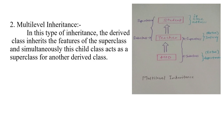The second type is multilevel inheritance. In this type, the derived class inherits the features of the superclass, and simultaneously this child class acts as a superclass for another derived class. For example, student has id, name, and address. Teacher also has id, name, and address, plus salary — so teacher is the subclass and student is the superclass. Now, HOD also has id, name, address, salary, and additionally department. So HOD inherits from teacher, making teacher the superclass and HOD the subclass. This is multilevel inheritance.